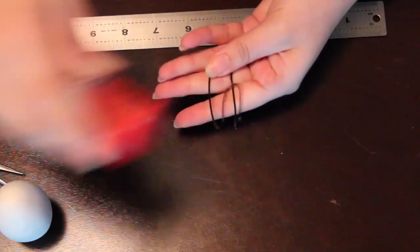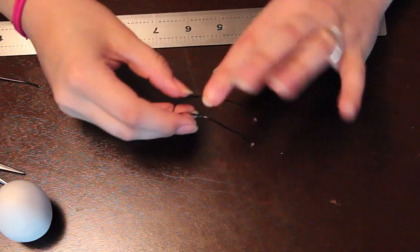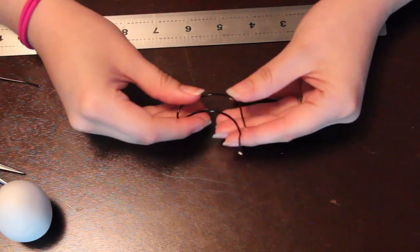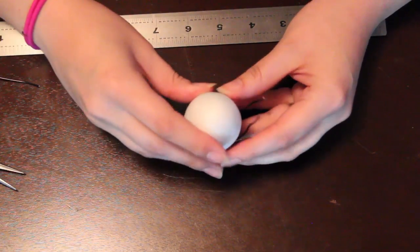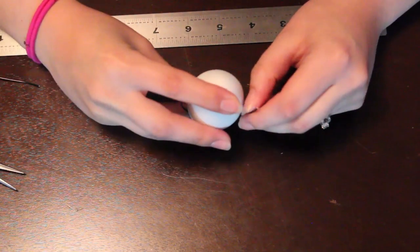So we're going to curve it upwards. It should look something like this. So your egg shape should be able to fit and sit nicely in this little cubby that you just created.